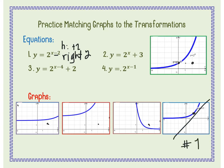Equation 2 has a plus 3 as the k value, which shifts the graph up 3. The y-intercept moves from (0, 1) to (0, 4). Looking at the graphs, one point should be at (0, 4). The graph is a growth since b equals 2. The only graph with a point going up 3 from the parent function is graph number 2.